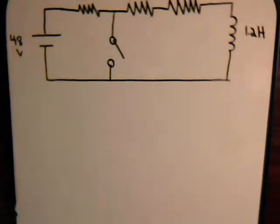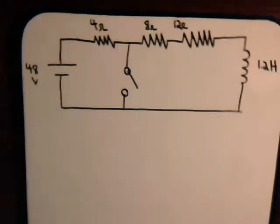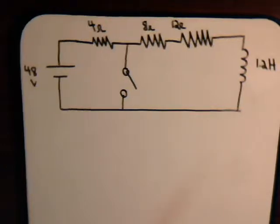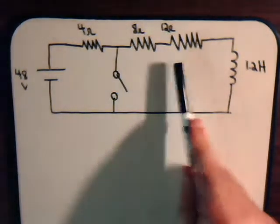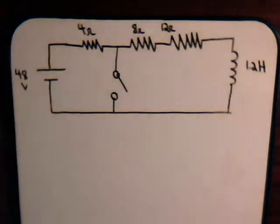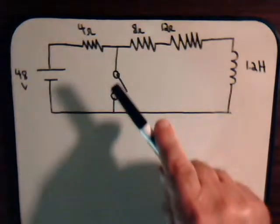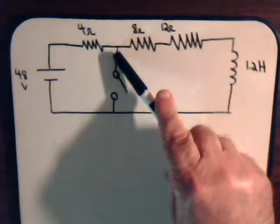The circuit looks like this. We have resistor, resistor, resistor, and a coil over here, and just a battery of 48 volts. What we're going to do is close the switch and then ask ourselves what will be the current that flows through this conductor.